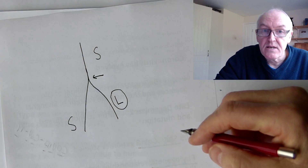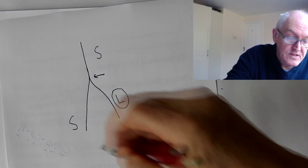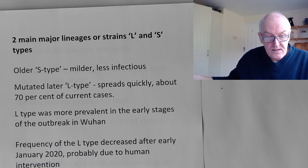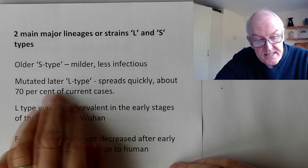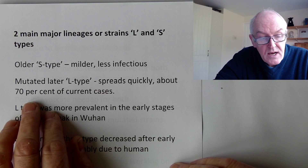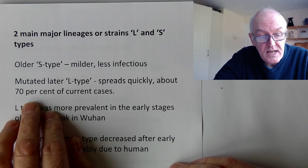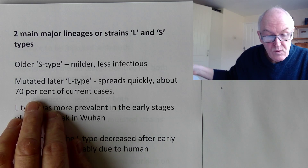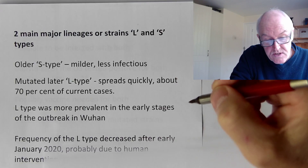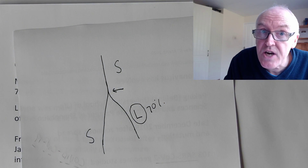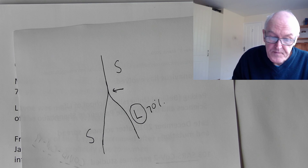The L form is considered to be more infectious and more virulent - it can transmit more easily from person to person and can cause more severe disease. We now have two main strains in the world. Originally, when these Chinese scientists were looking at it, 70 percent of the viruses they examined had the L form genome. Most cases were L form - about 70 to 75 percent - in their initial study, inside China.